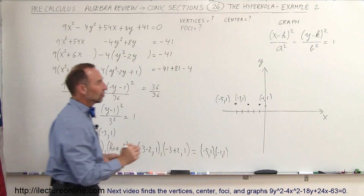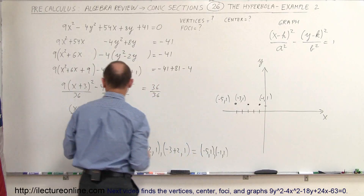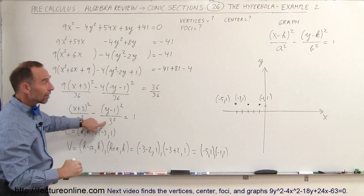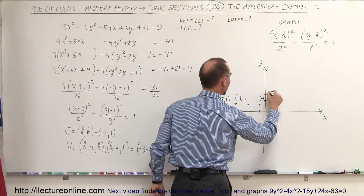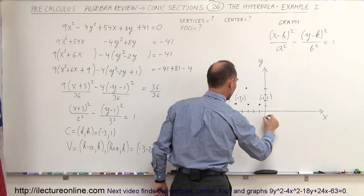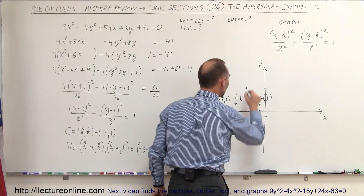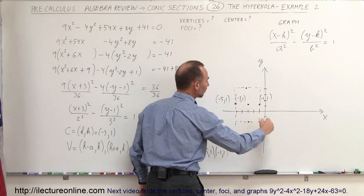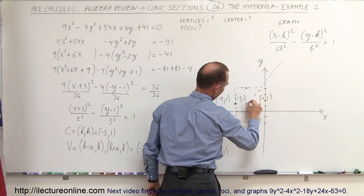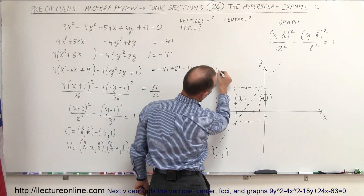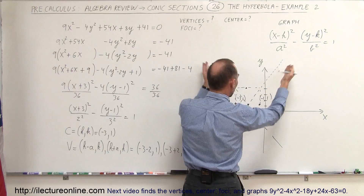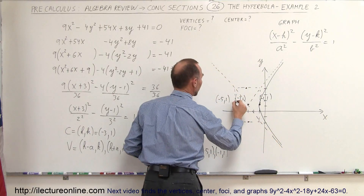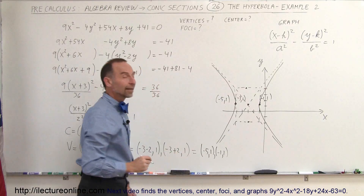Now we need to draw a box. Starting from the center, we go up b and down b. Since b equals 3, we go up 3 and down 3 from the center, giving us two points in the vertical direction. That lets us draw the reference box. Then we draw the asymptotes through the corners of the box and through the center. Knowing the vertices, we sketch the hyperbola opening to the right and left along the transverse axis.